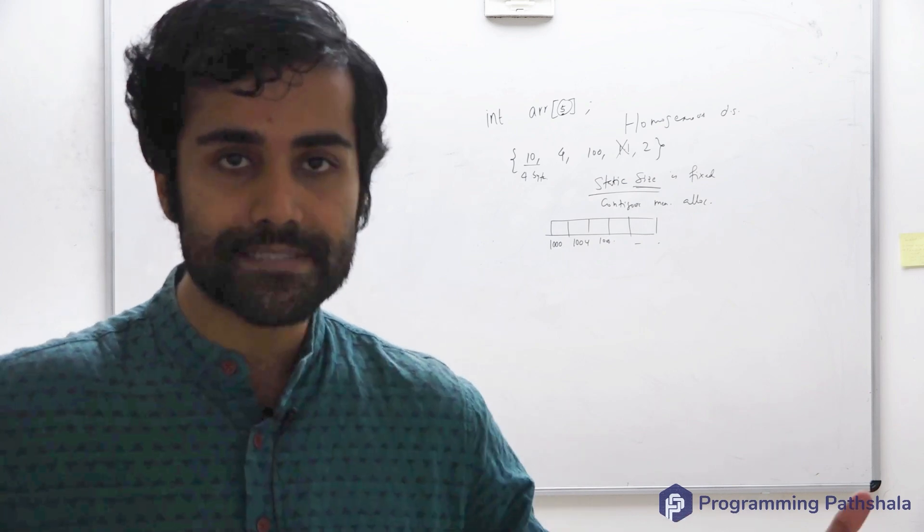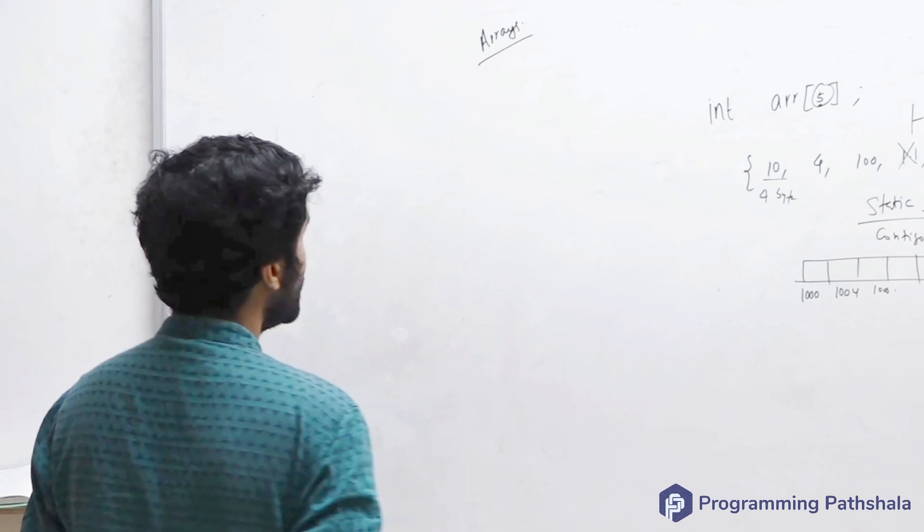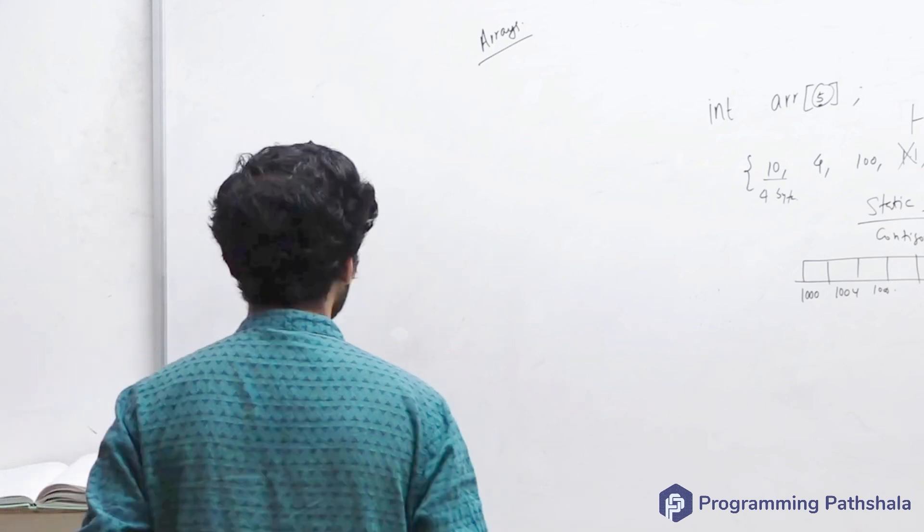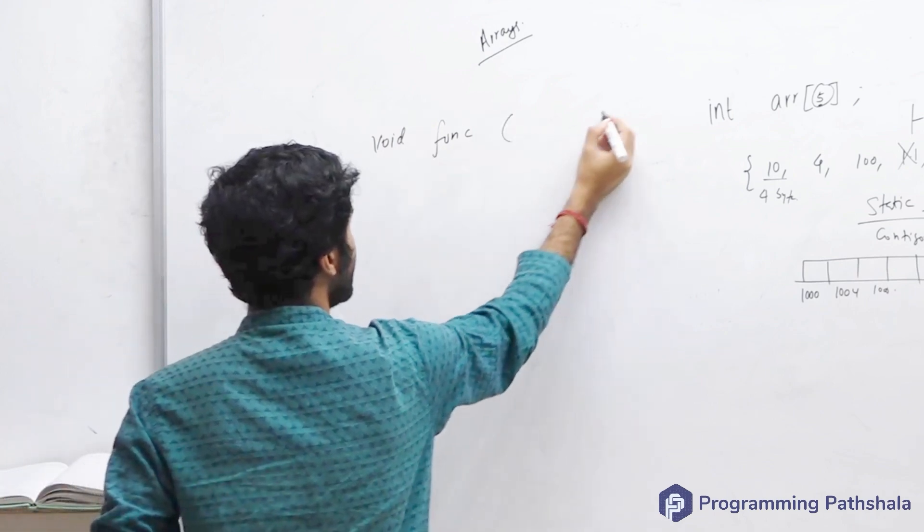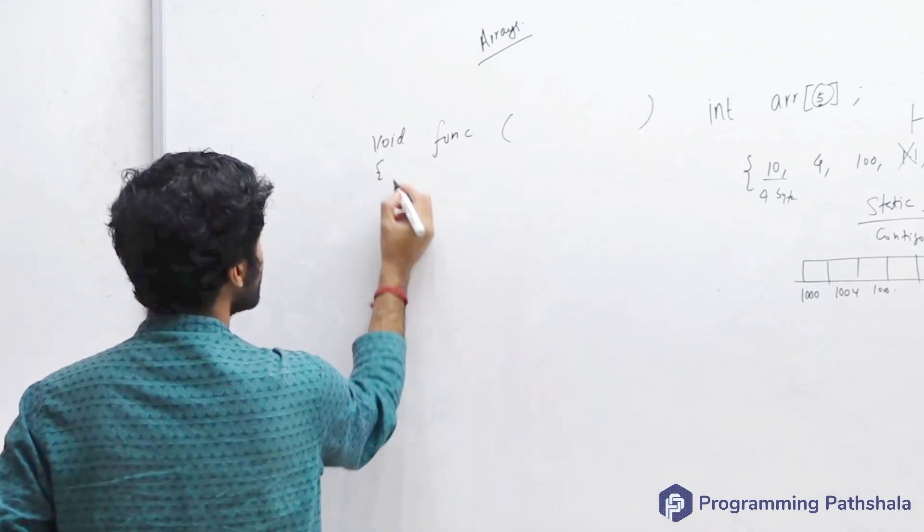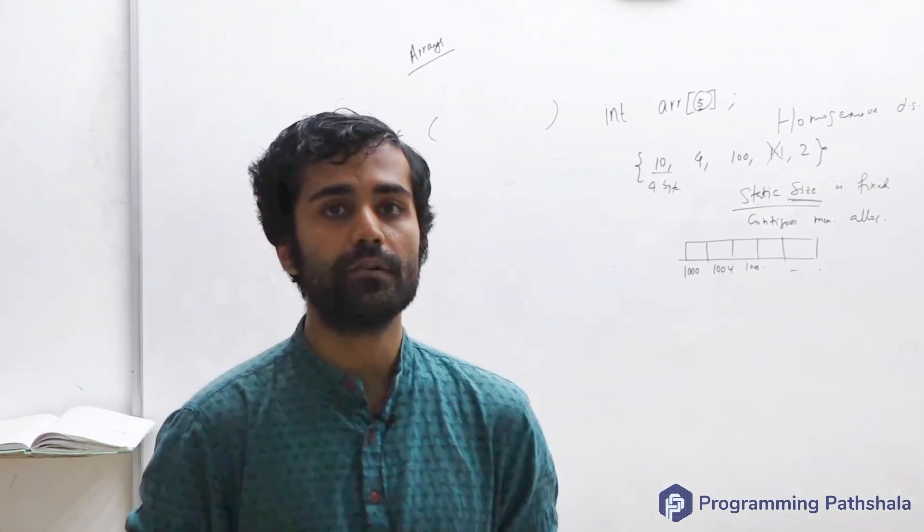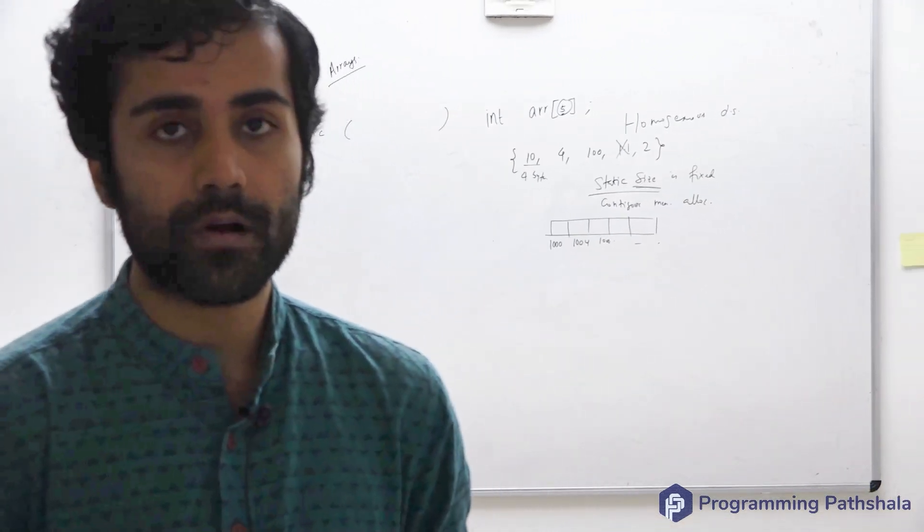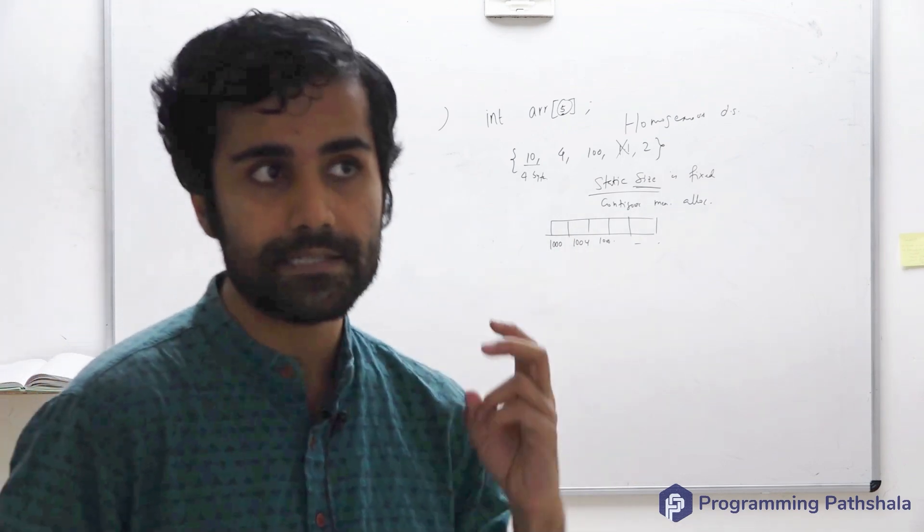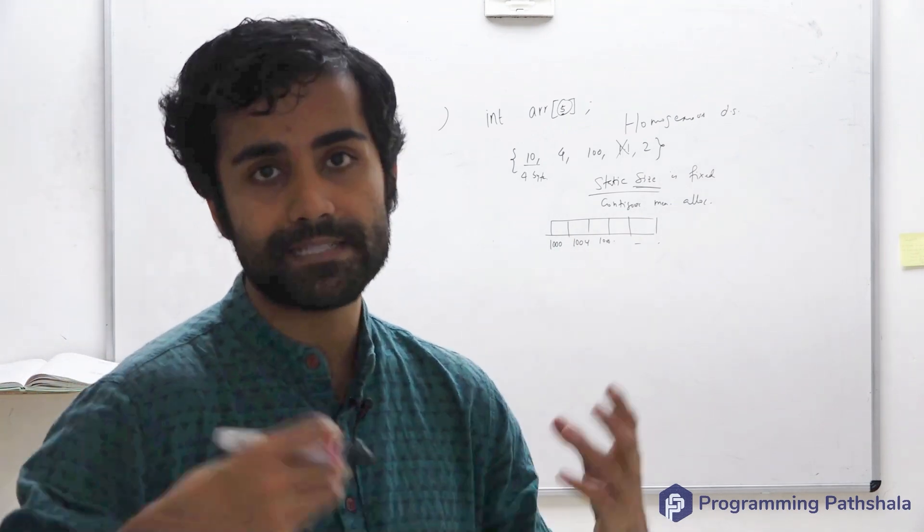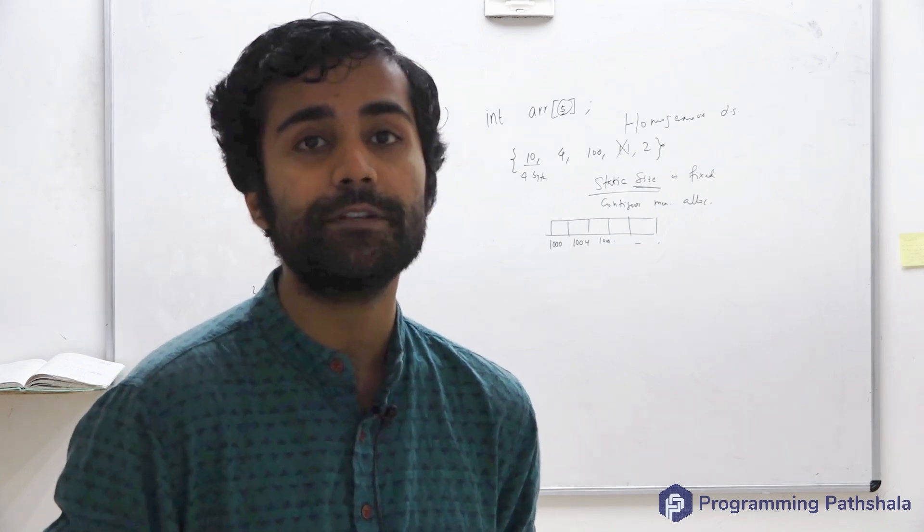Another thing all of you might be aware of is functions. Let's say there is a function and to this function you wish to pass an array. How do you pass an array? Or let's generalize it - how do you pass a variable? Any variable can be passed by two ways: either pass by reference or pass by value. Is everyone clear with the difference between these two things?